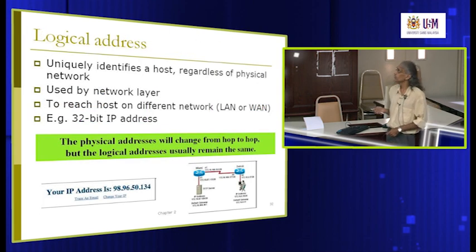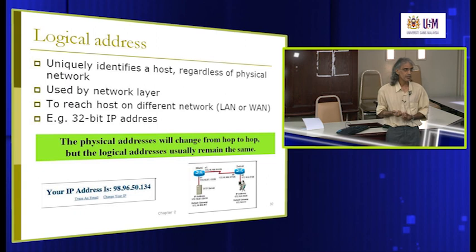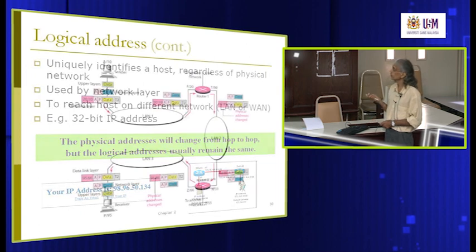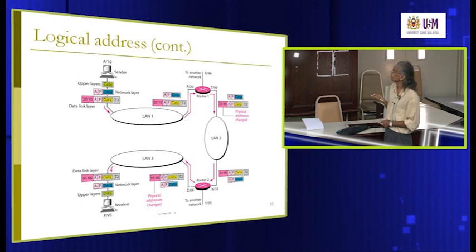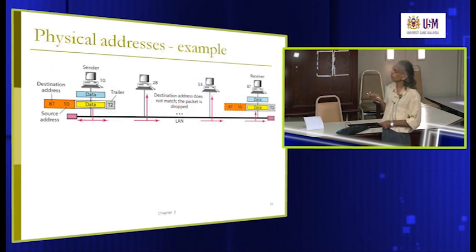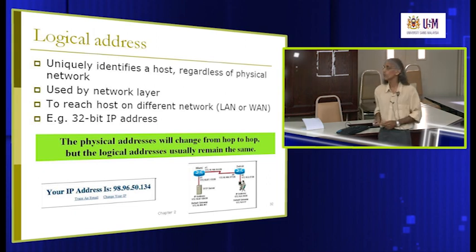The logical address (IP address) uniquely identifies the host regardless of the physical network. It is a higher-level address at layer 3 of OSI. Physical address can only reach a machine on the same network or LAN — it cannot go outside. The logical IP address allows you to reach a host on a different LAN altogether. Analogy: your IC (identity card) is your physical address — it works locally; your passport is your IP address — recognized everywhere.